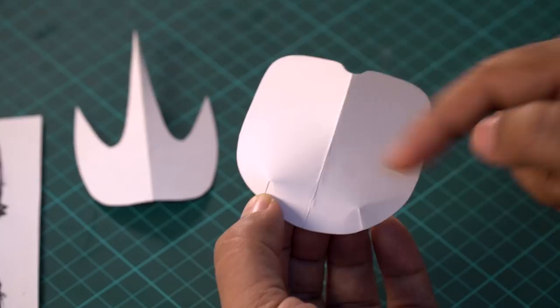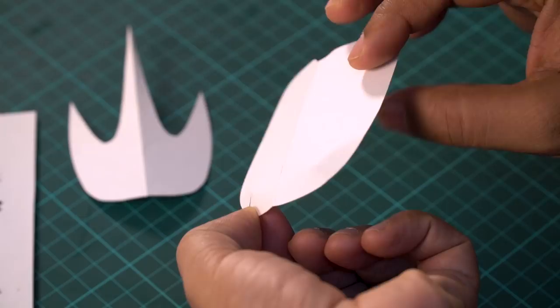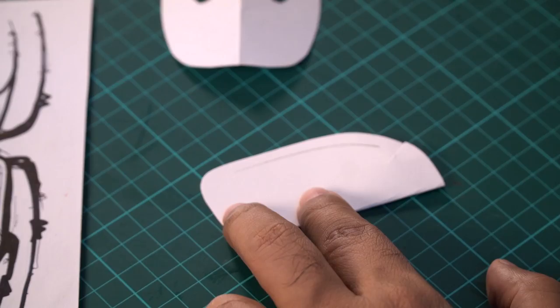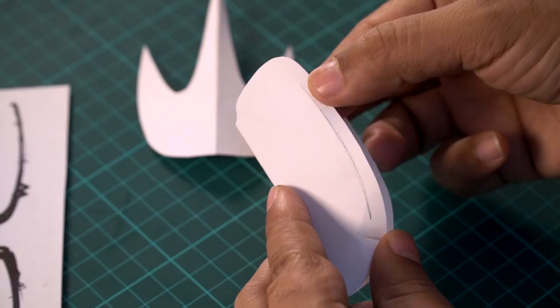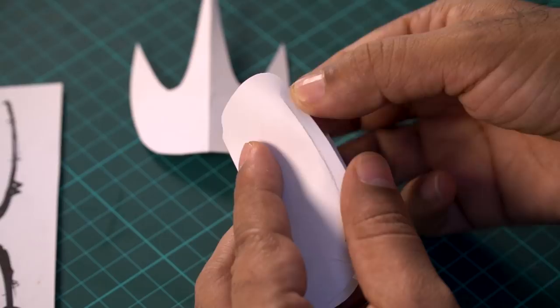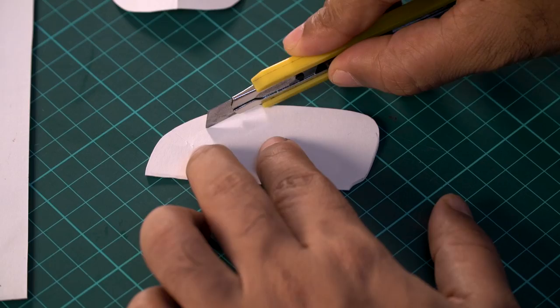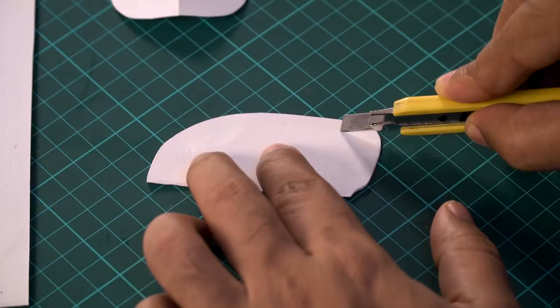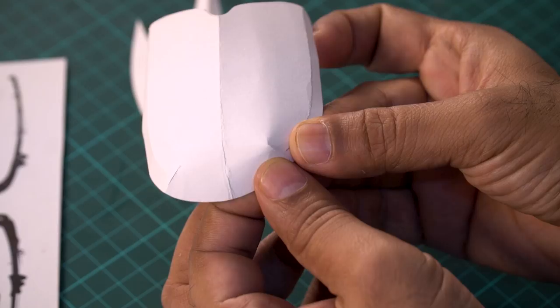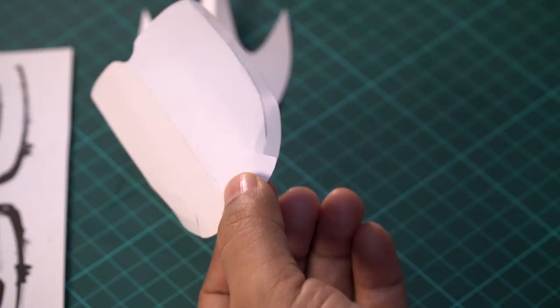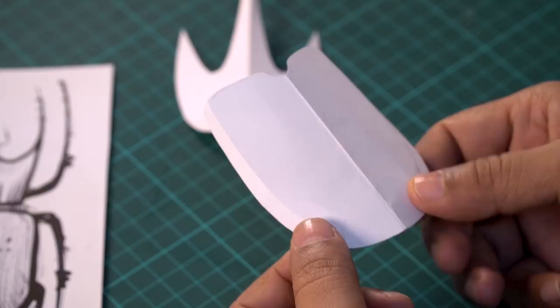But I want the sides also to be slightly raised. So to explain it better, I'm going to make a line here. Now to score, take a cutter and apply a little bit of pressure. So you're creating a dent. So you're cutting it slightly. But don't apply too much pressure. Otherwise, you will cut through the paper and you don't want that. So we'll do it on the other side as well. Like that. So it's a little raised on the side. And you can just bend it a little bit. Now we'll just stick this. To stick it, I'm using white glue. So with this cut and this scoring line, the body is done.